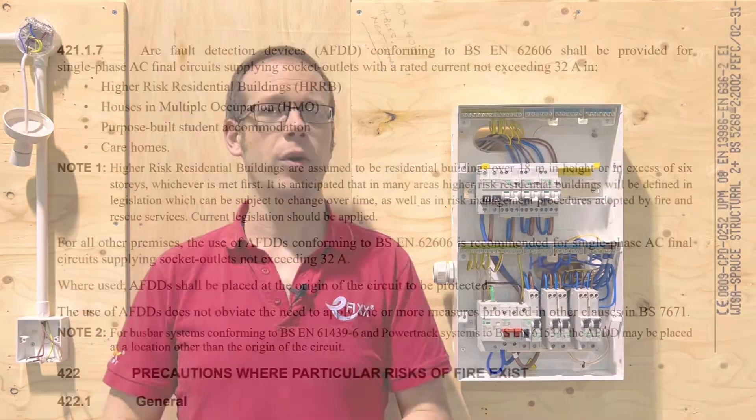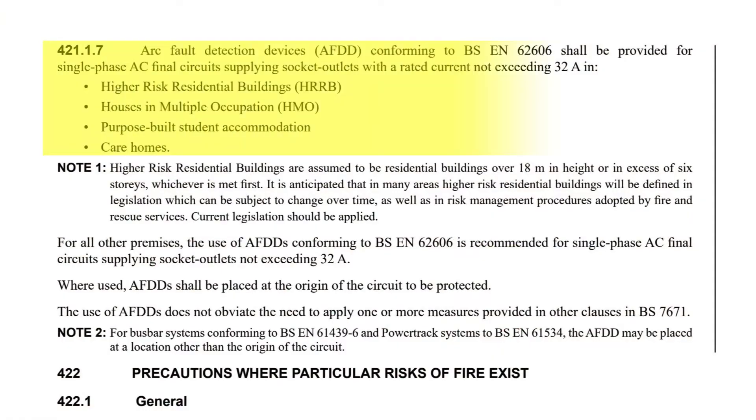Well regulation 421.1.7 states that arc fault detection devices AFDD conforming to BSEN 62606 shall be provided for single phase AC final circuits supplying socket outlets with a rated current not exceeding 32 amps in higher risk residential buildings, houses of multiple occupation, purpose-built student accommodation and care homes.